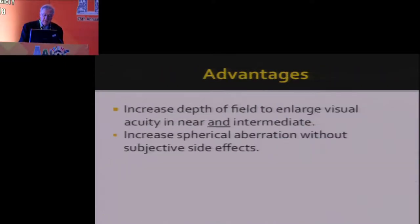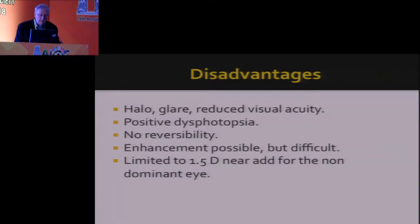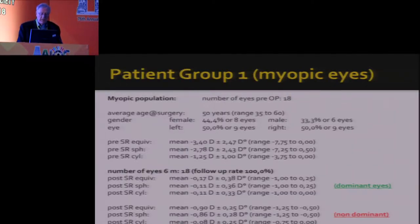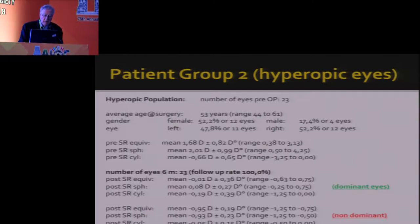Treatment range is from plus 4 to minus 6. Advantages include increased depth of field to enlarge visual acuity in near and intermediate, and increased spherical aberration without subjective side effects. Disadvantages include halo, reduced visual acuity, positive dysphotopsia, no reversibility, and enhancement possible but difficult, limited to 1.5 diopter anisometropia. In the myopic group, pre-spherical equivalent was minus 3.40 and six months later minus 0.17 for the dominant and minus 0.90 for the non-dominant eye. In the hyperopic group, pre-spherical equivalent was plus 1.68 — after half a year, minus 0.02 for dominant eye and minus 0.94 for non-dominant eye.